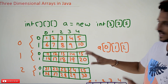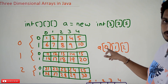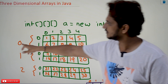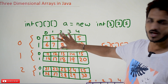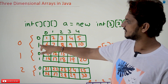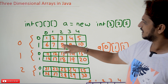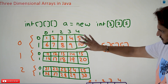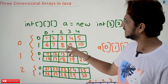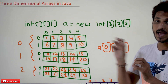Now, if you want to access an element, say a[0][1][2] — the first zero indicates the first two-dimensional array; one means the first line (index one) in that two-dimensional array; and two means the second column. So 8 is going to be displayed.